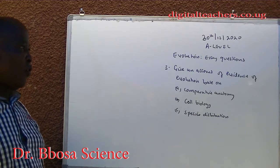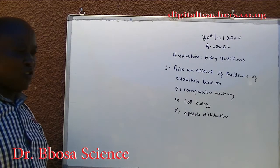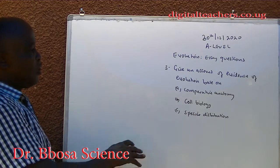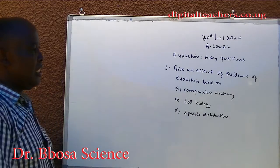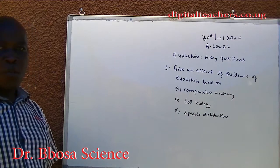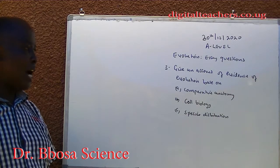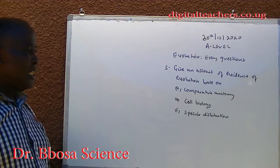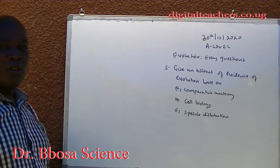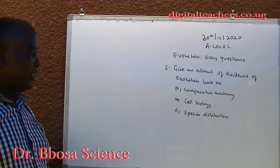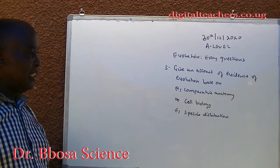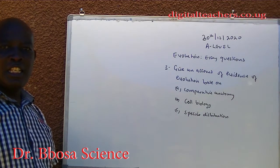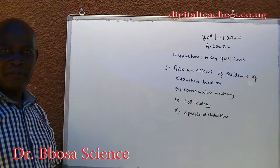Question 3. Give an account of evidence of evolution based on: A. Comparative anatomy. B. Cell biology. C. Species distribution.